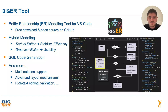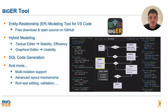Another key feature of BigER is its support for SQL code generation, which means we can generate database tables from the specified ER models. There is currently support for a generic SQL and five different dialects to integrate with existing databases such as MySQL or Postgres. Other important features include multi-notation support to change the representation in the diagram — for example, the crow's foot notation — advanced layout mechanisms such as automatic initial layout and edges automatically adjusting when moving elements, and rich text editing support through the Language Server Protocol, such as autocomplete or hover information, plus validation in both the graphical and textual editors.